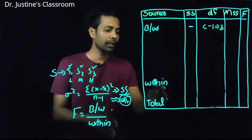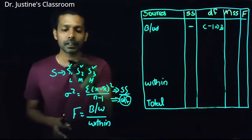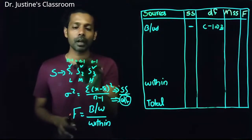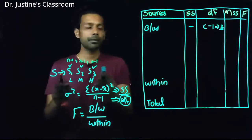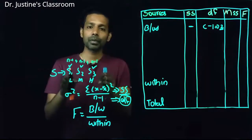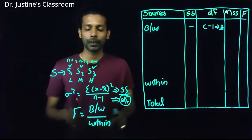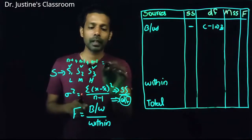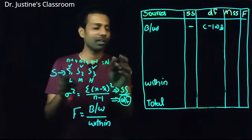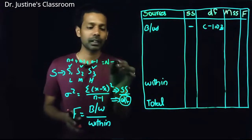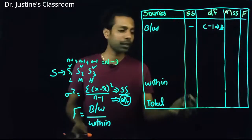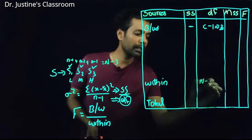For within-group variance, you calculate n minus 1 for each group separately, then add all those values together. So it's (n1 minus 1) + (n2 minus 1) + (n3 minus 1). When you add all the individual n's, the total becomes capital N — the total number of participants. The three groups contribute a subtraction of 3.